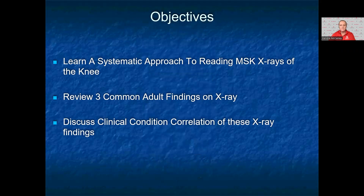Our objectives today are to run a systematic approach to reading musculoskeletal x-rays of the knee, to review three common adult findings on knee x-rays, and to discuss clinical conditions that correlate to knee x-ray findings.